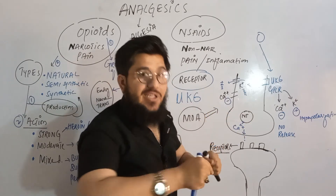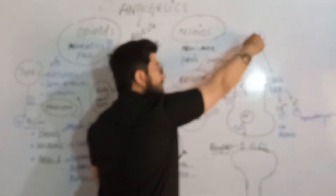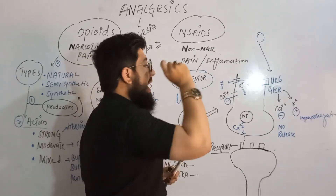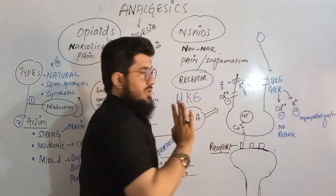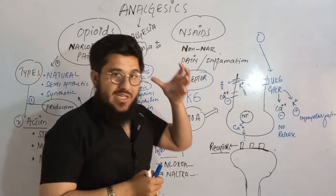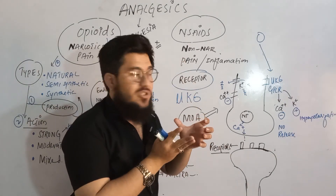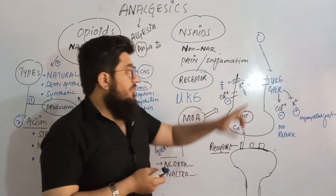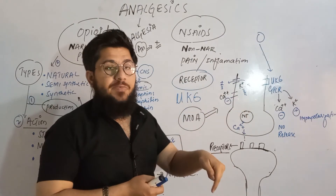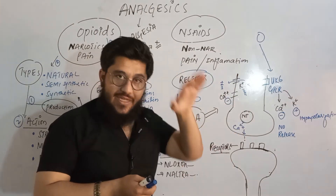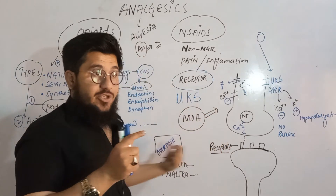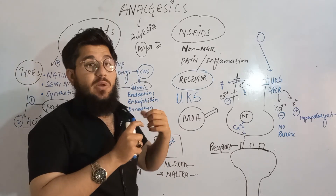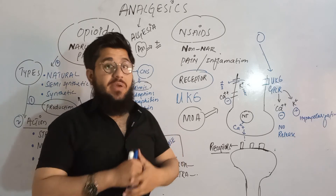With no calcium influx, there is no fusion of the vesicle with the neuron terminal, so neurotransmitters are not released. In short, opioids hyperpolarize the neuron — stopping signal conduction — and inhibit neurotransmitter release. As a result, the pain signal is not transmitted and we do not feel pain. This is how opioids alleviate pain.